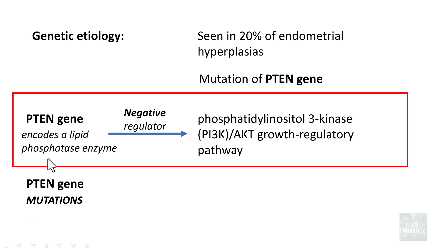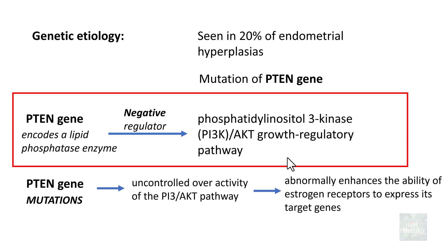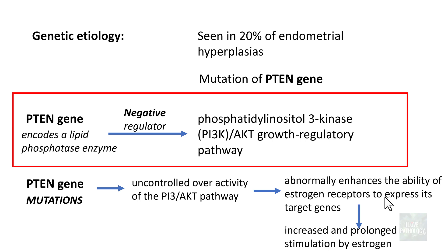Whenever there is a mutation of the PTEN gene, it results in uncontrolled overactivity of the PI3K/AKT pathway. Because of this overactivity, the ability of estrogen receptors to express their target genes is abnormally enhanced, resulting in increased and prolonged stimulation by estrogen, which in turn leads to endometrial hyperplasia. So in summary, there is unopposed estrogenic stimulation combined with reduced progesterone levels.